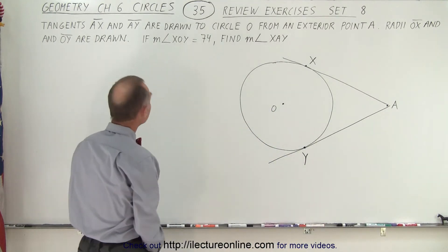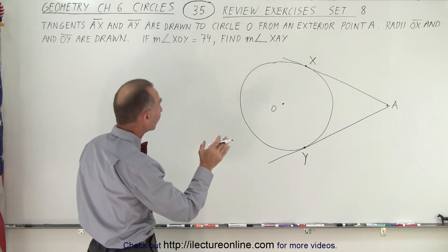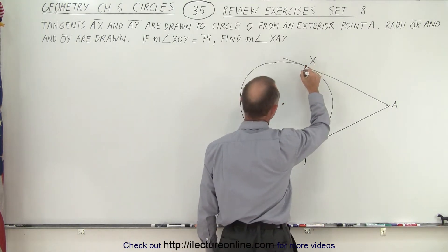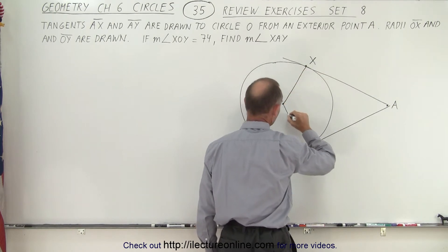Alright, so now they also tell us to draw radii from O to X and O to Y. So we draw a line from here to here and a line from here to here.